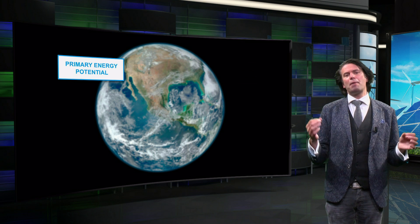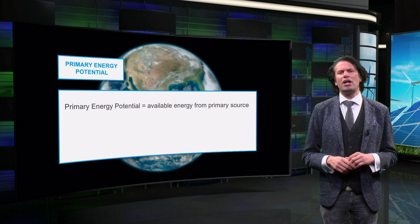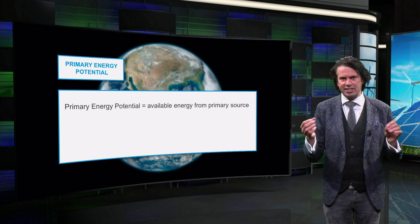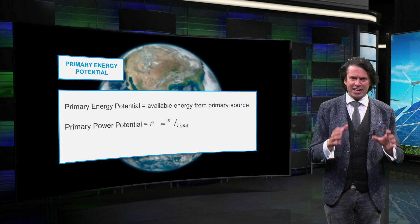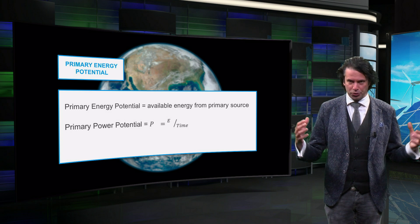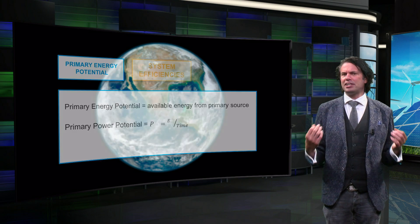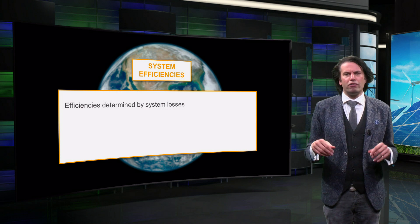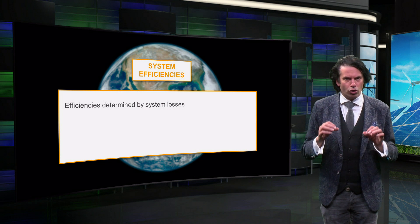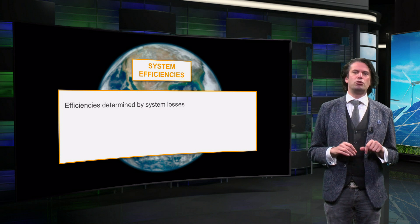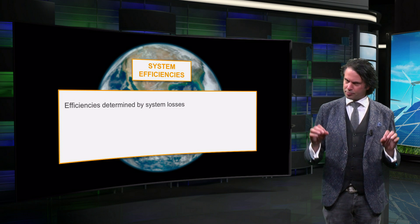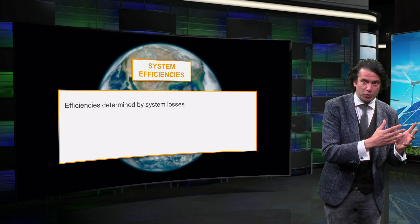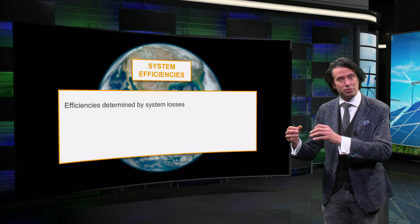The primary energy potential is known as the available energy from the primary source. We may also express this as the power potential, if you take the available energy per unit time. The primary energy has to be converted into useful energy. We will look into the fundamental conversion efficiency losses for each of the renewable energy systems. The output power of a system is equal to the product of the primary potential and its system efficiency.